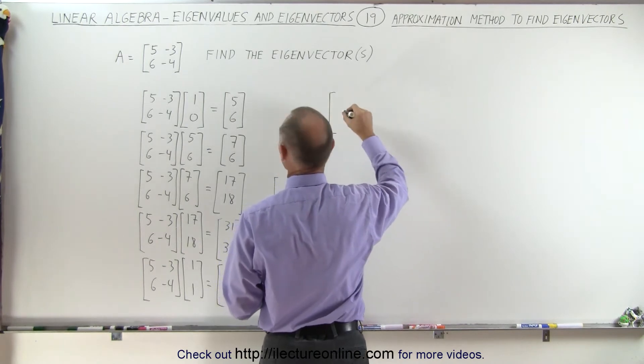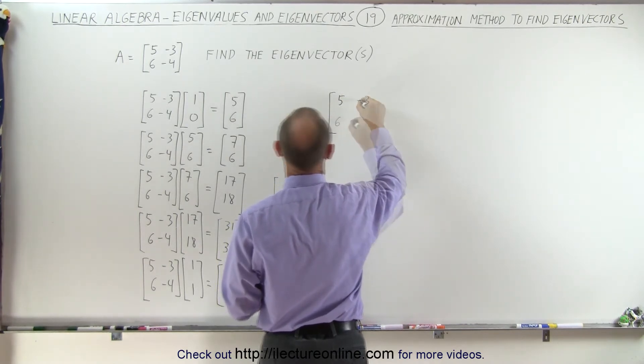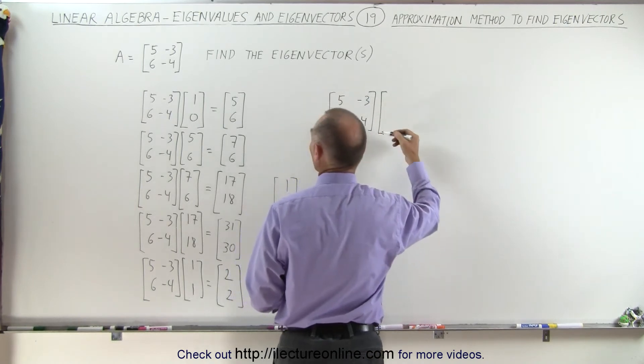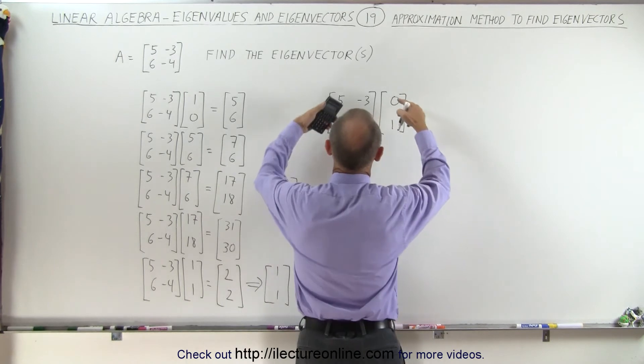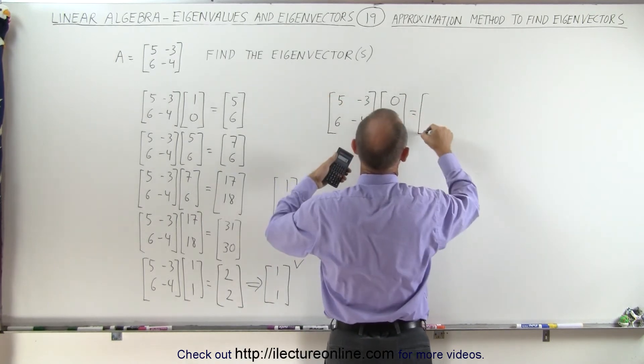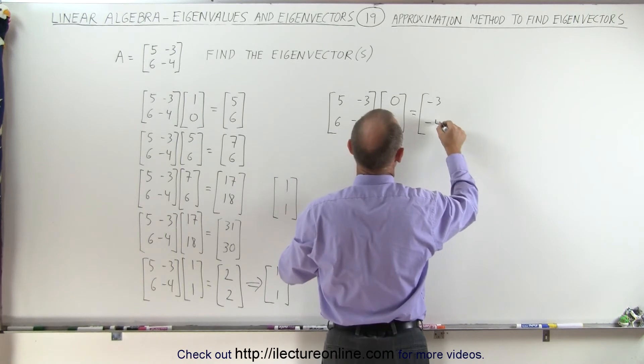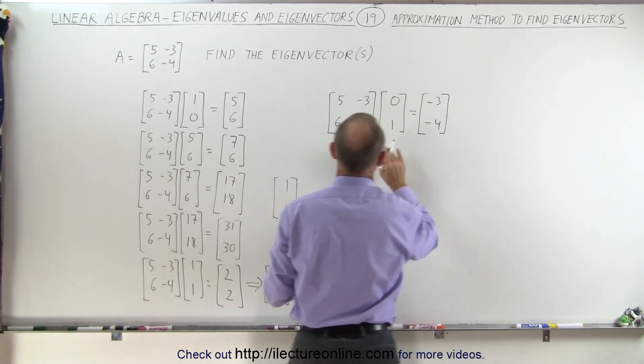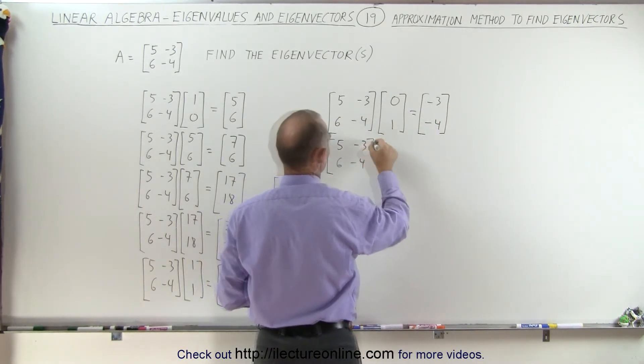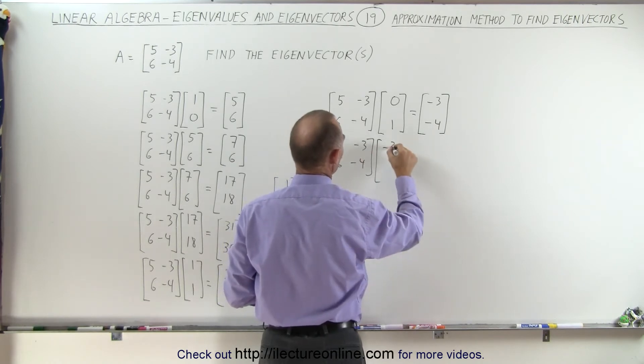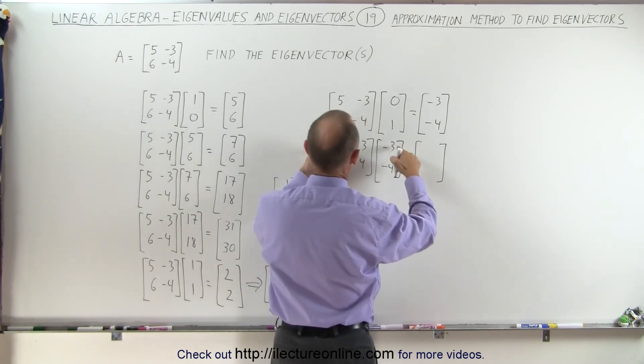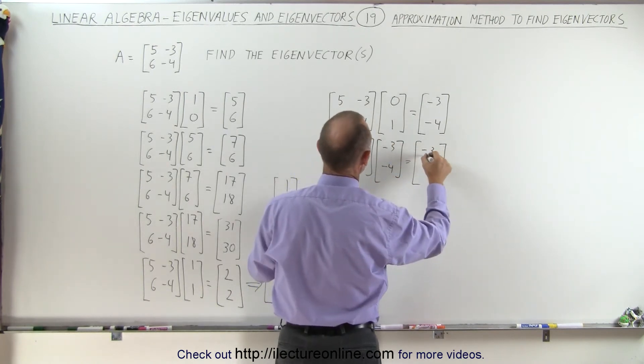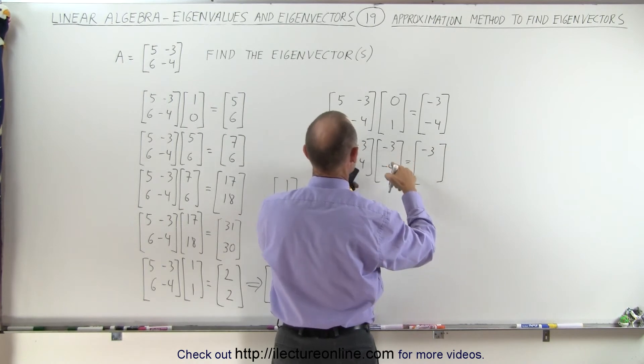So next, we're going to take the same matrix again, 5s and minus 4, and instead of starting with the original matrix of 1, 0, we'll start with 0, 1. And let's see what that gives us. So that's 0 minus 3, and that's 0 minus 4, and then we'll use that as our next multiplication. So 5 minus 4, multiply that times minus 3 minus 4, and see what we get. So we get minus 15 plus 12, that's minus 3, and that's minus 18 plus 16, that's minus 2.